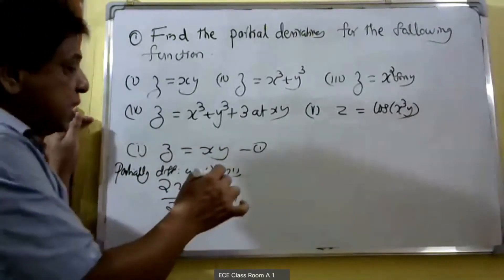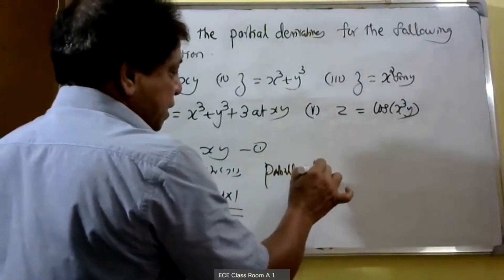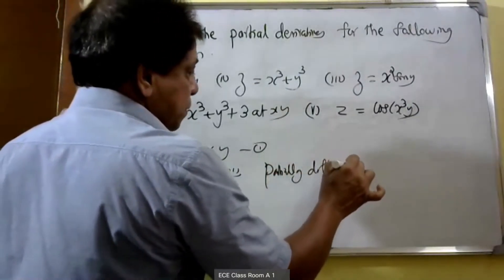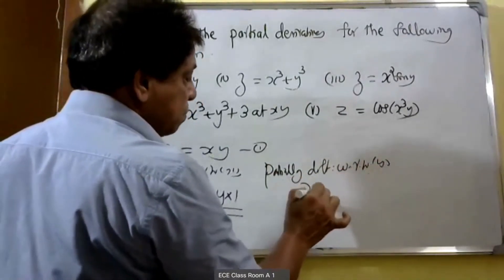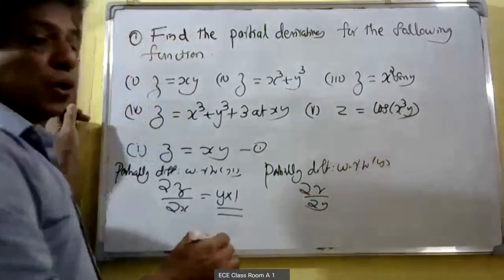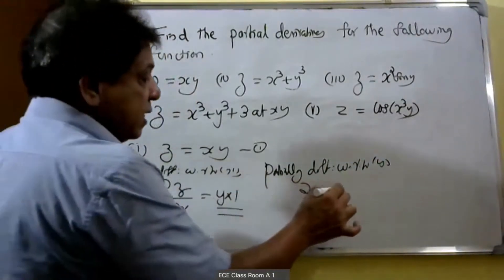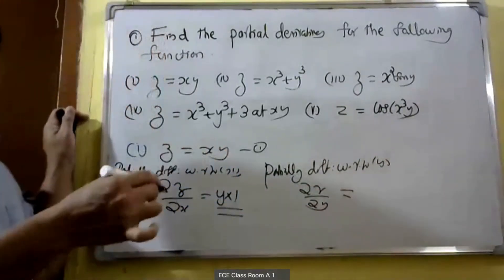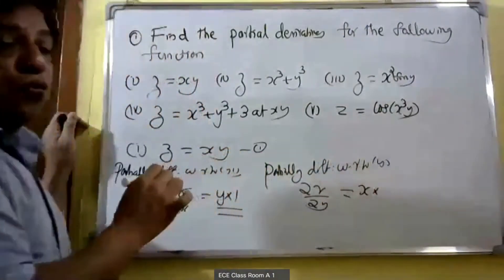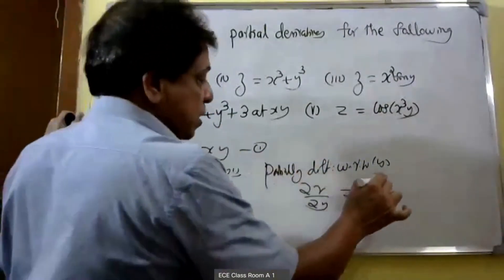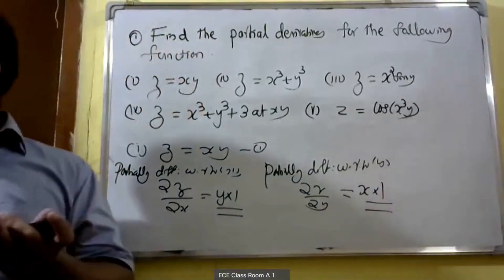Similarly, partially differentiating with respect to y, then we get ∂z/∂y. When partially differentiating with respect to y, x is treated as constant. x into derivative of y. Derivative of y is equal to 1. Therefore ∂z/∂y is equal to x. This is the first problem.